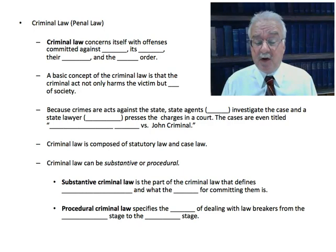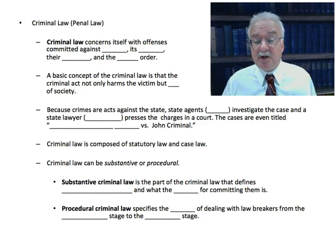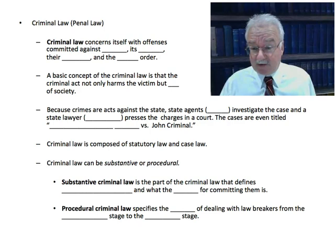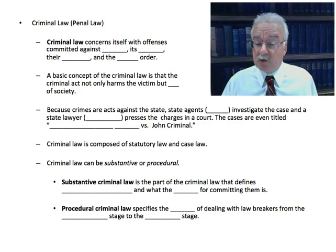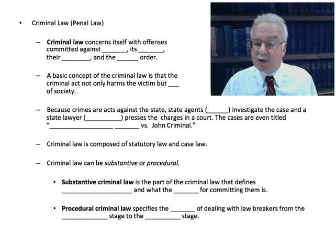Procedural criminal law specifies the procedures for dealing with lawbreakers, from the earliest government involvement at the investigatory stage by police, all the way to the punishment stage after conviction. All of the procedures and rules are in the procedural law. For example, there are specific rules on when a police officer can stop, question, and frisk somebody — the officer needs reasonable suspicion to stop and question, and reasonable fear that the person is armed and dangerous for the frisk.